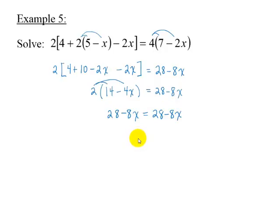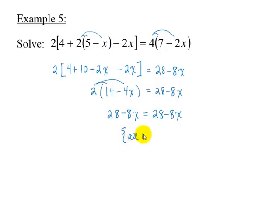Examining the equation at this point, notice that the left side is the same as the right side. No matter what value we replace the variable with, the left side and right side will be the same. Every real number is a solution. The solution set is all real numbers. We can also use a bold-faced R to designate all real numbers.